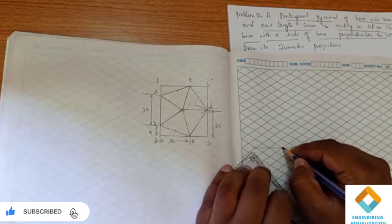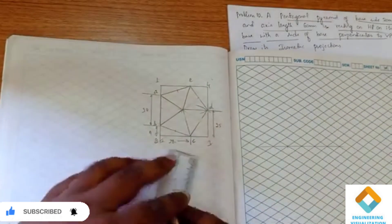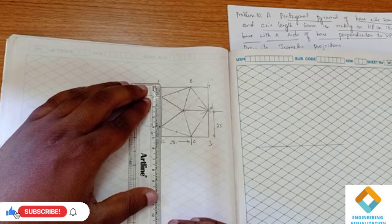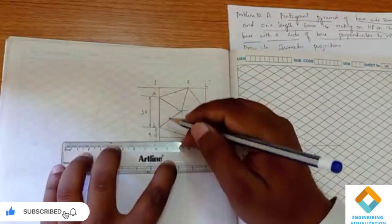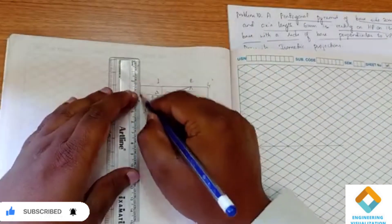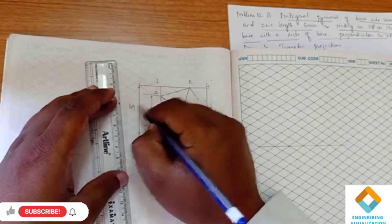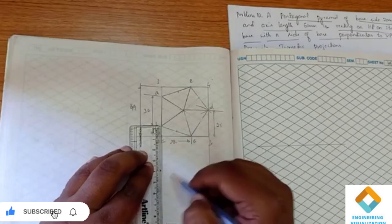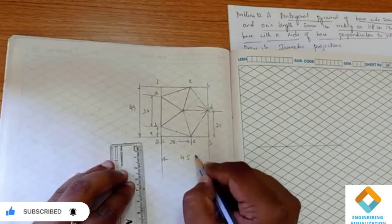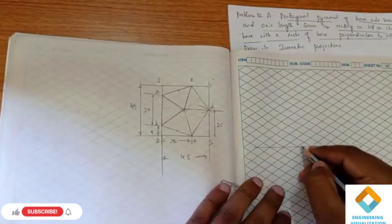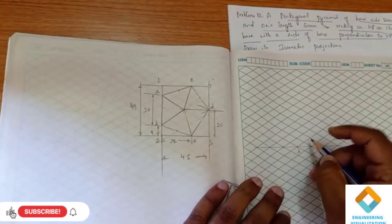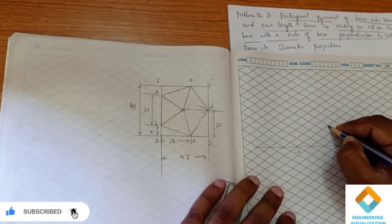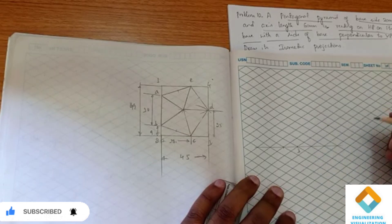First I am going to measure the box dimension — this is around 49. It is around 49, and this is around 45. So that means if I am starting from point 1 here, from 1 to 2 we have 49. I am going to mark approximately 49 here, then similarly 45 from 2 to 3.